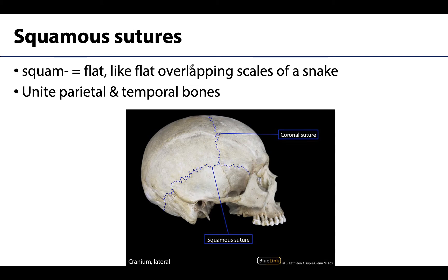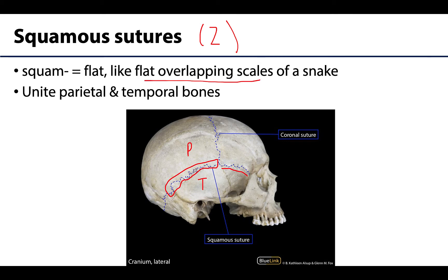Looking at a lateral view, we have the only sutures that are going to be paired. There will be two squamous sutures, one on each side. The squamous suture will be between the parietal bone and the temporal bone. What's unique is it will look almost like two plates of bone meeting — kind of flat overlapping scales that really distinguish this suture from the others. There would be another one on the left side as well.